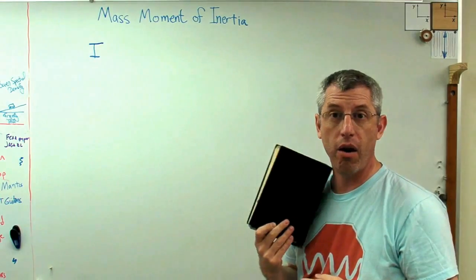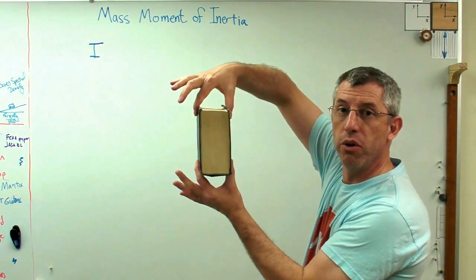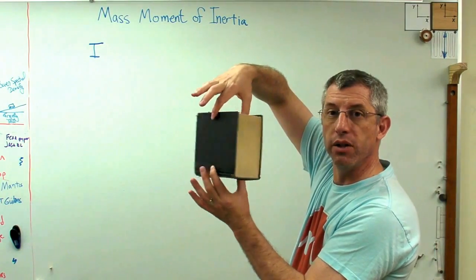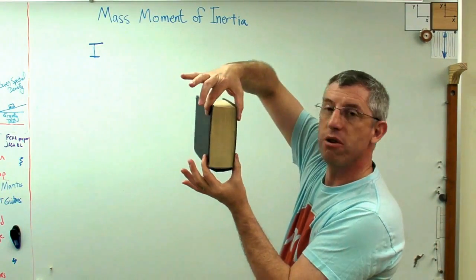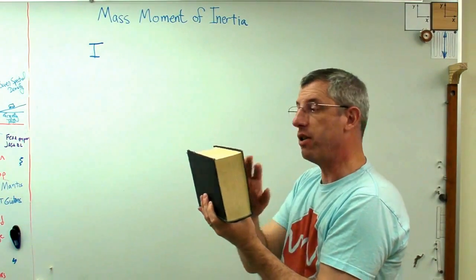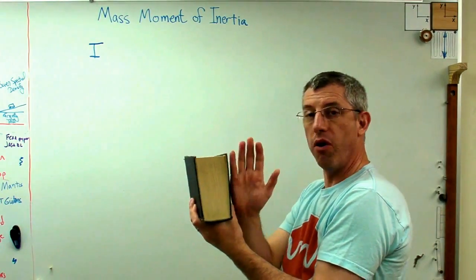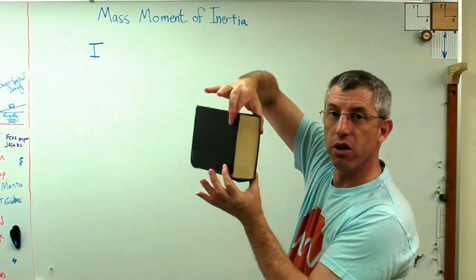Let's say I go this way and I'm trying to rotate about the center of the book. I'm going to get one answer. If I try to rotate about the end of the book, I is going to get larger. There's more mass out there that's farther away from the center of rotation. I actually goes up, so if I want to generate the same rotational acceleration, I'm going to have to use a larger moment.